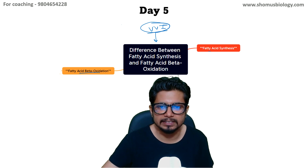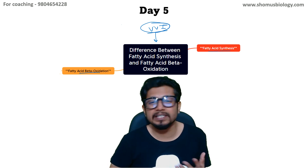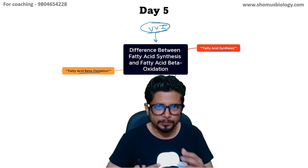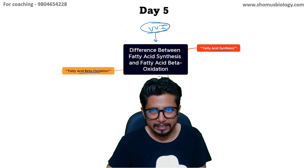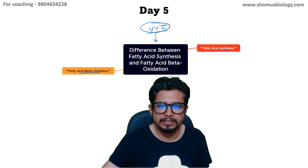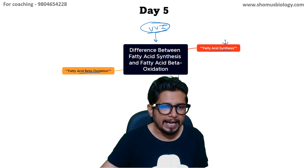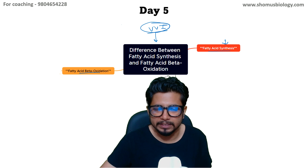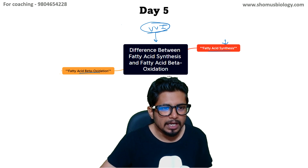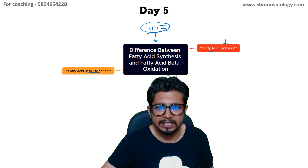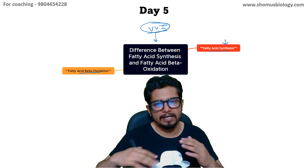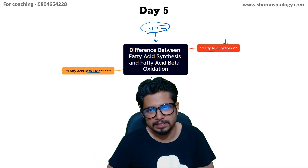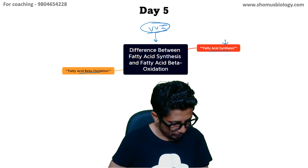Fatty acid beta oxidation is the utilization of fatty acid to produce energy — that is a catabolic pathway. Fatty acid biosynthesis is an anabolic pathway. The catabolic pathway produces energy, while fatty acid biosynthesis requires energy. They have similar pathways and similar enzymes, but the pathways are opposite to each other.